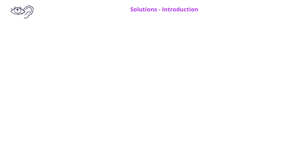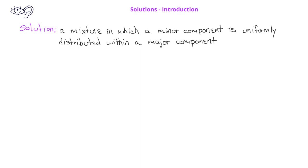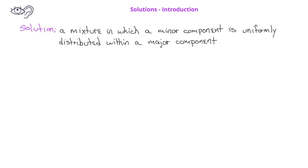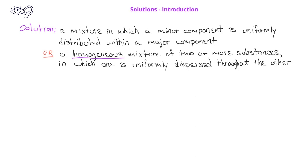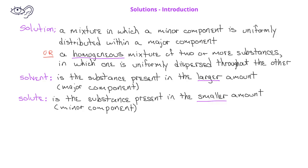We've already provided one definition of a solution as a mixture in which a minor component is uniformly distributed within a major component. We can expand on this definition a little bit by adding that a solution is a homogeneous mixture of two or more substances in which one substance disperses uniformly throughout another. We have special words for the minor component and the major component. The major component we call the solvent and this is the substance that is present in the larger amount. The minor component is a substance present in the smaller amount and we call this compound the solute.